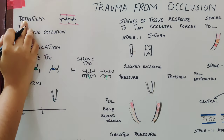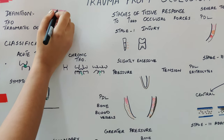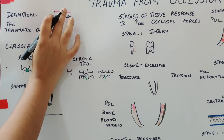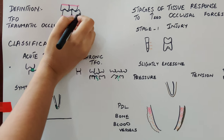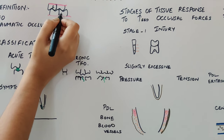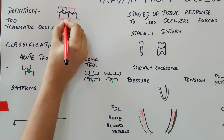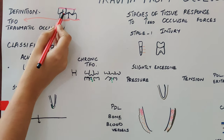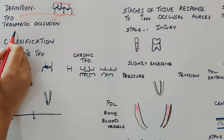Before going to the definition, I'd like to discuss some terminologies. Occlusal force is the force exerted on the opposing teeth when you clench your teeth. When this occlusal force exceeds the adaptive capacity of the supporting tissues, injuries result. This injury is called trauma from occlusion, and the occlusion causing this injury is called traumatic occlusion.